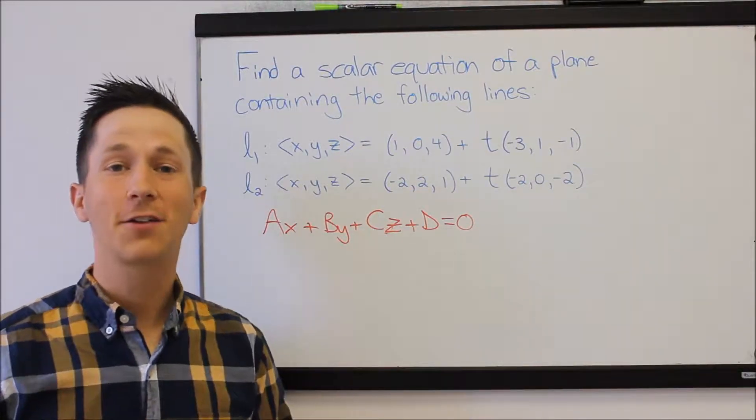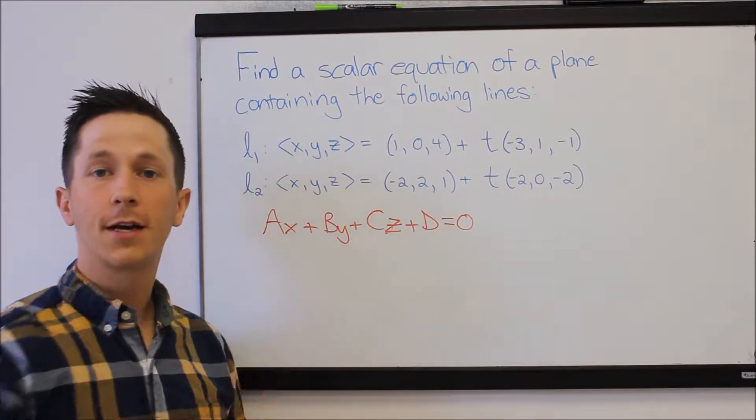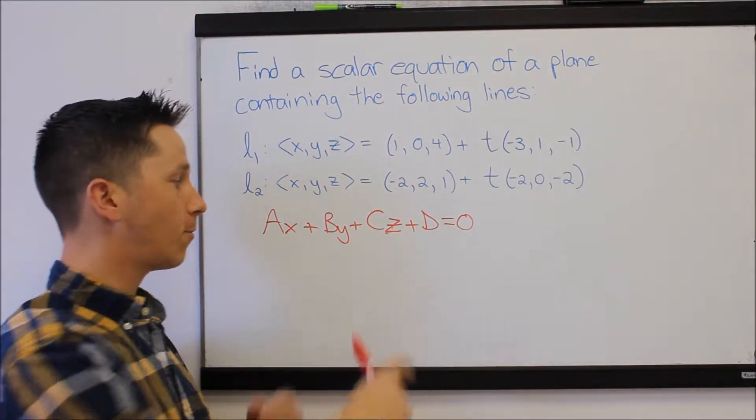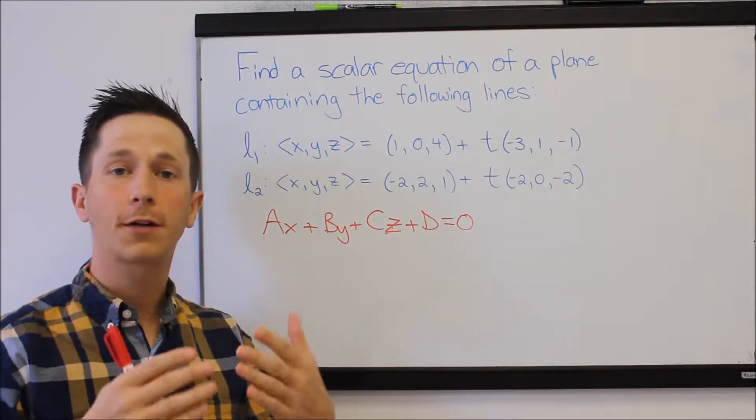In this question we're asked to find the scalar equation of a plane that contains these two lines. The scalar equation takes on this format where A, B, and C are the components of the normal vector to the plane.